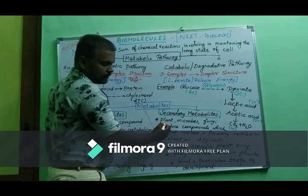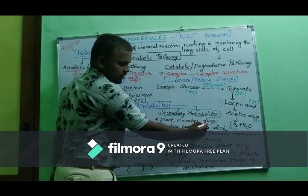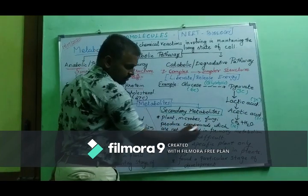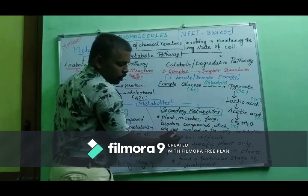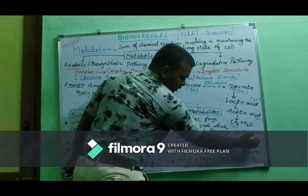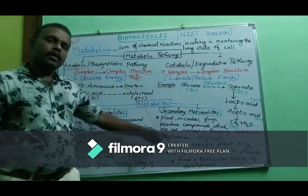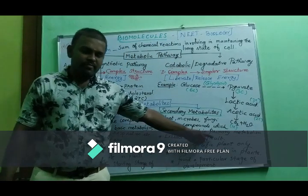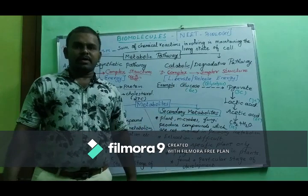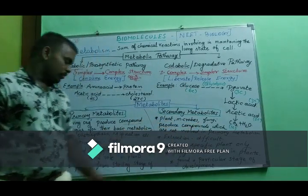On the other hand, plants, microbes, fungi, and other organisms can produce compounds that are not involved in primary metabolism. These are not essential functions for the organism itself, but they are very useful for human beings. We call these secondary metabolites.